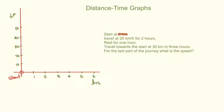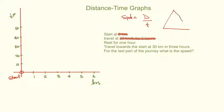The second bit of information says that we should travel at 20 kilometers an hour for two hours. Now in the first video I reminded you that average speed is equal to distance over time. And also I showed you a quick little triangle.